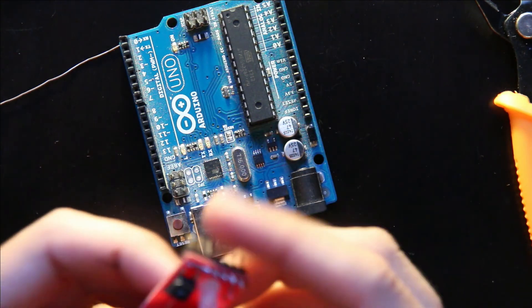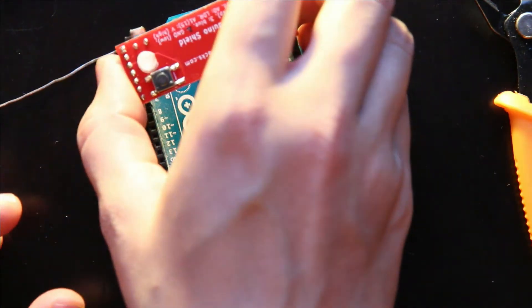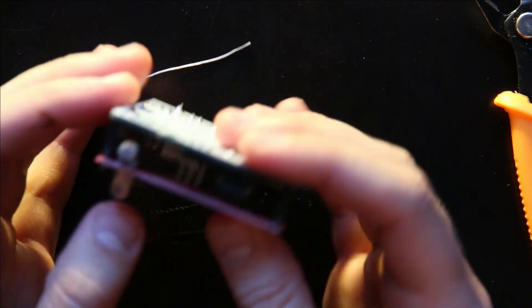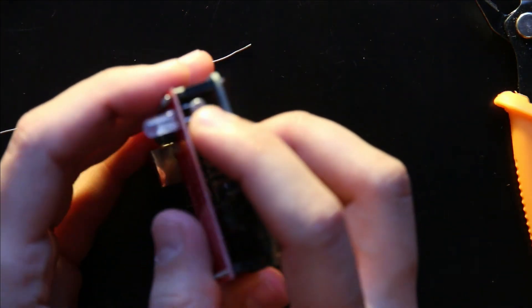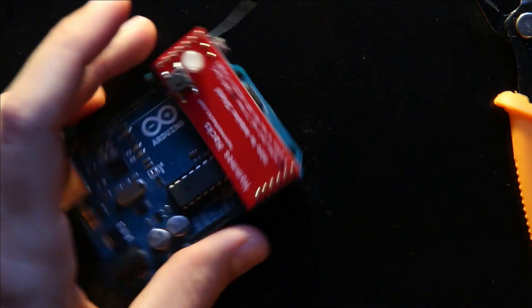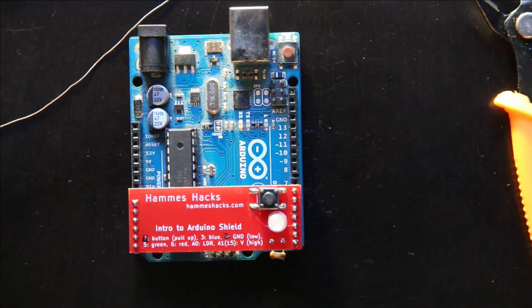So now that it's all soldered together we just plug it in to the Arduino. Like this and the LDR will stick out, the LED will be on top and the button is like this. So that's our finished shield. And now we can go on to do the other programming videos.